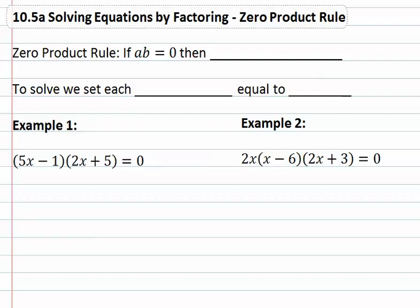In this video we're going to take a look at how we can solve equations by factoring using something called the zero product rule. What the zero product rule basically says is if we have two things multiplied, a times b, and the answer is zero...